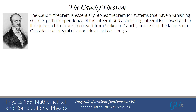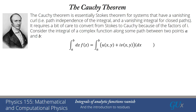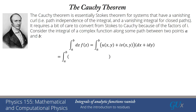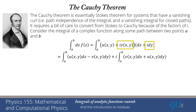Let's consider the integral of a complex function along some path between two points a and b: the integral of dz f(z). Using the notation f = u + iv and writing dz = dx + i dy, we get u(x,y) + iv(x,y) times dx + i dy. Collecting real and imaginary parts: the real part is u(x,y)dx − v(x,y)dy (the minus sign comes from i squared), and the imaginary part is i times [v(x,y)dx + u(x,y)dy].